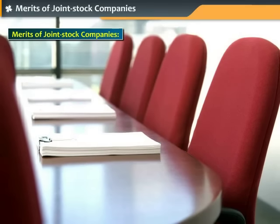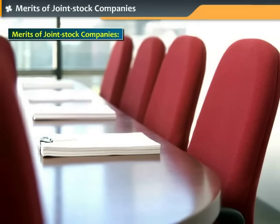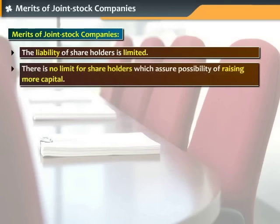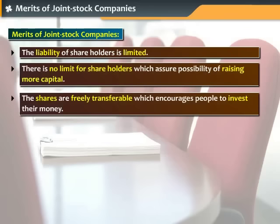Joint stock companies have a number of merits. In joint stock companies, the liability of shareholders is limited. There is no limit for shareholders in public limited companies, which assures the possibility of raising more capital. The shares of public limited companies are freely transferable, which encourages people to come forward and invest their money.